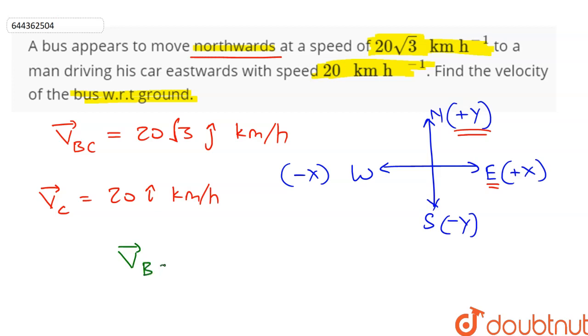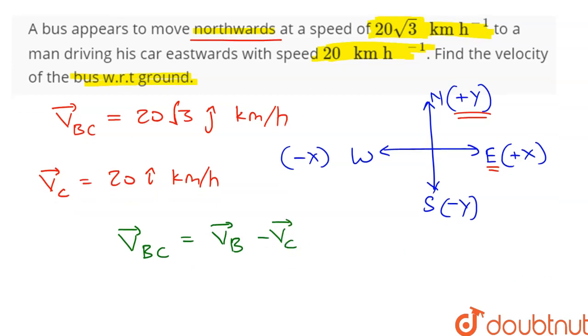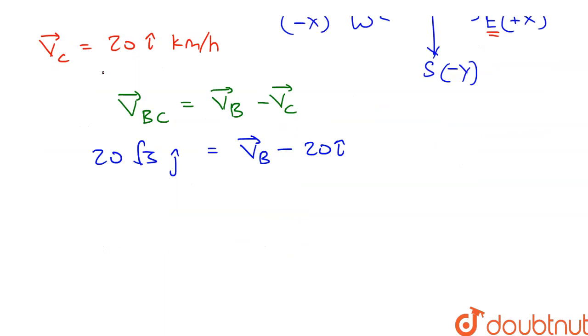Now we know that VBC is equal to VB minus VC. Therefore we can write 20 root 3 j cap is equal to VB vector minus VC vector is 20 i cap. Therefore we get VB vector equal to 20 i cap plus 20 into root 3 j cap kilometer per hour.